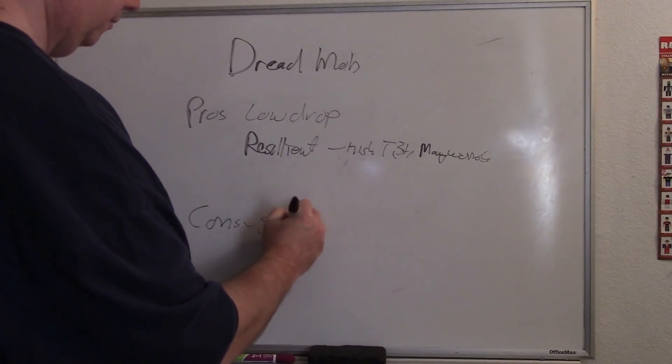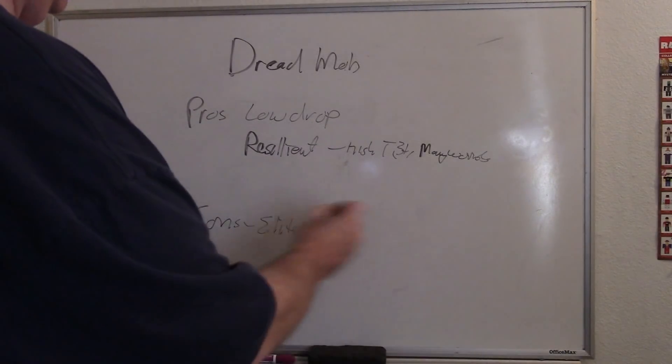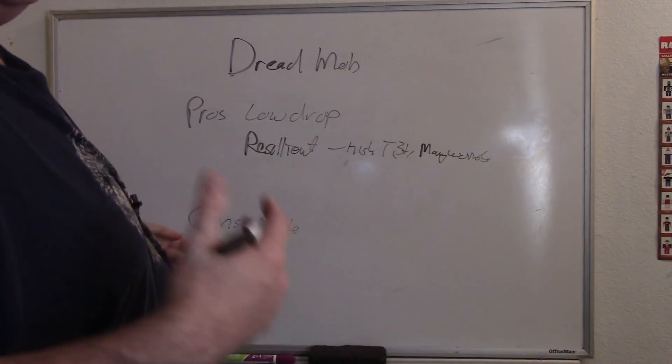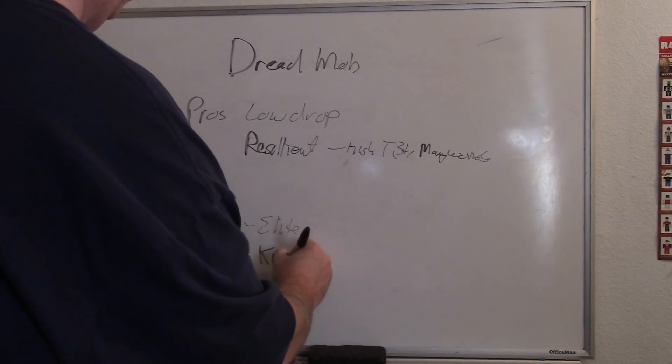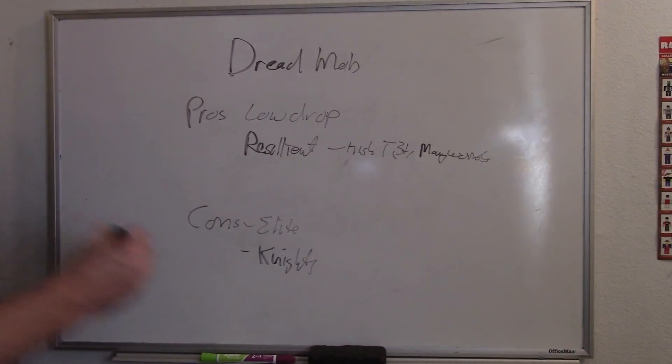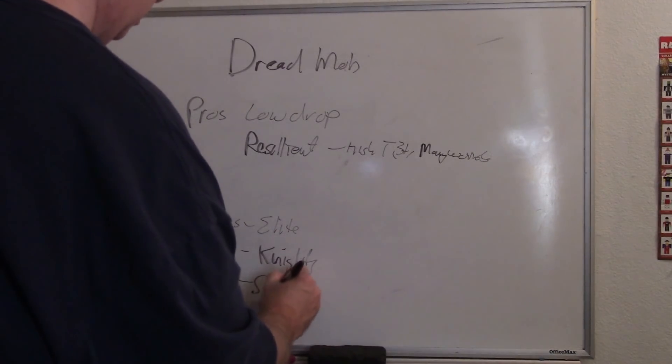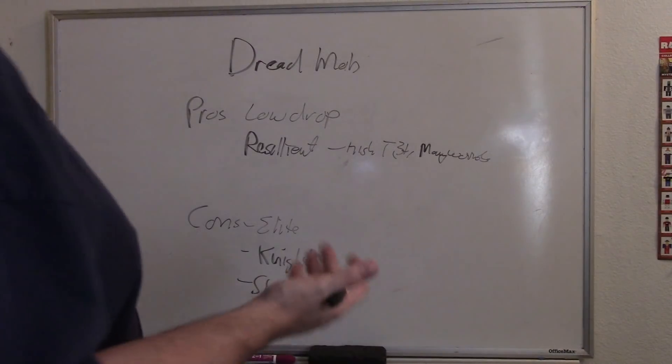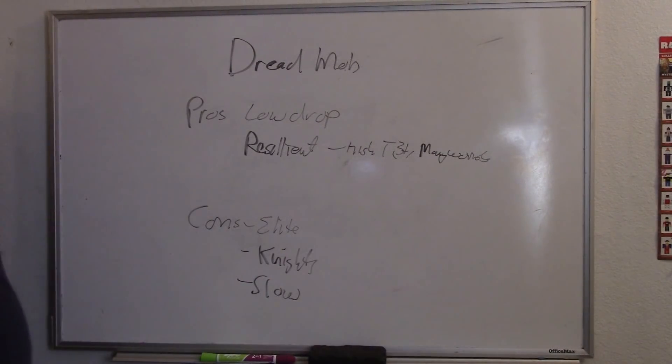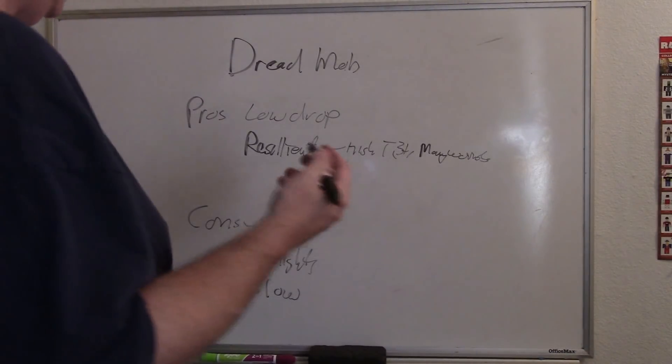Cons: slow model count, elite army, susceptible to knights. Knights suck when you're playing dread mob. Fairly slow, not entirely, but slower than the horde. You're not going to be able to have as many models to get to objectives as you can usually be able to with a horde army.